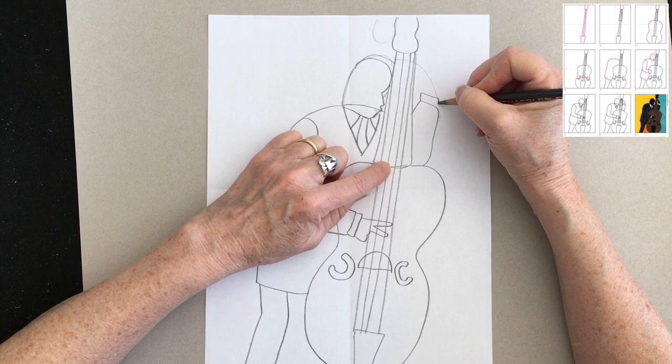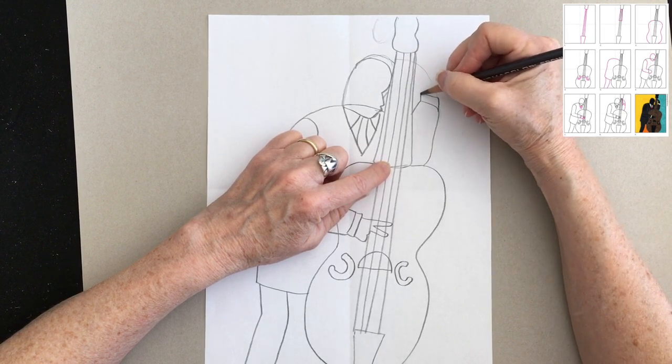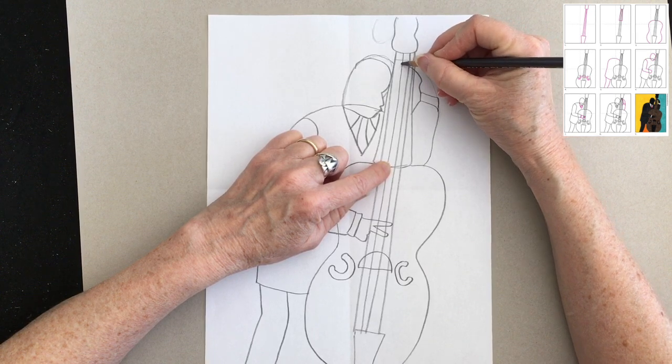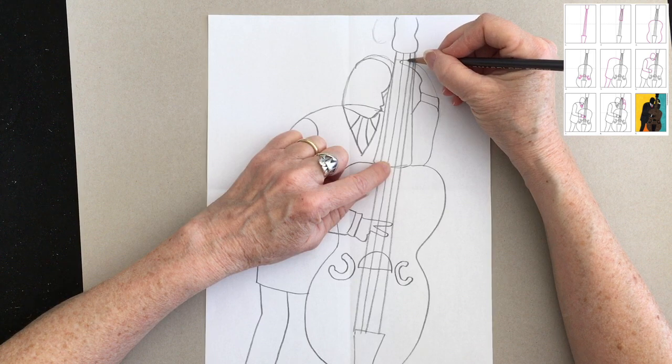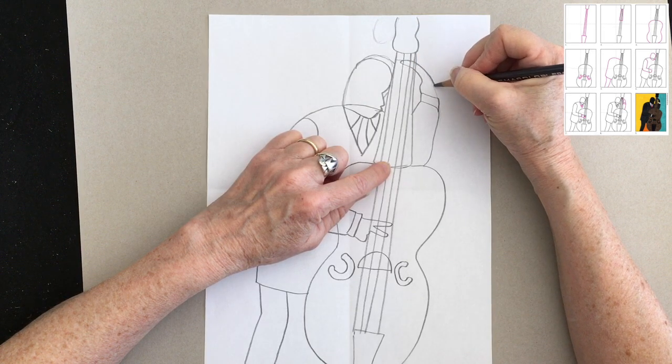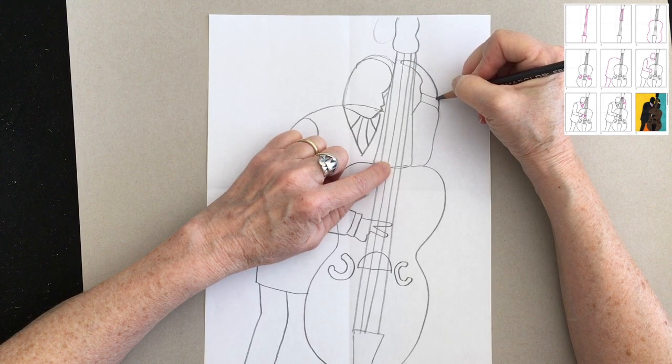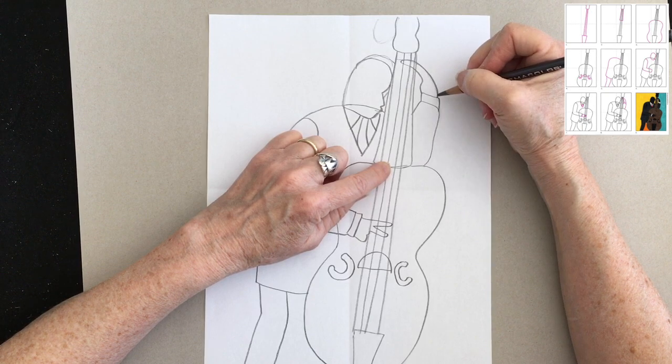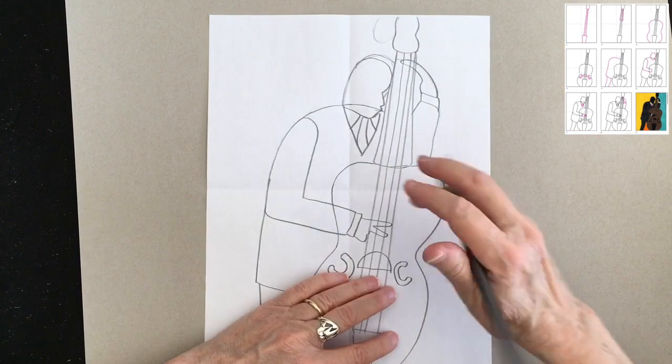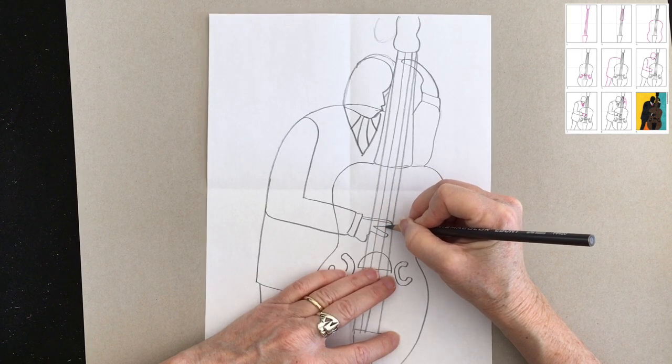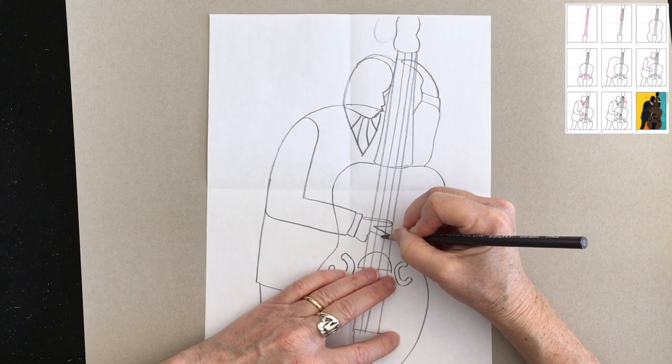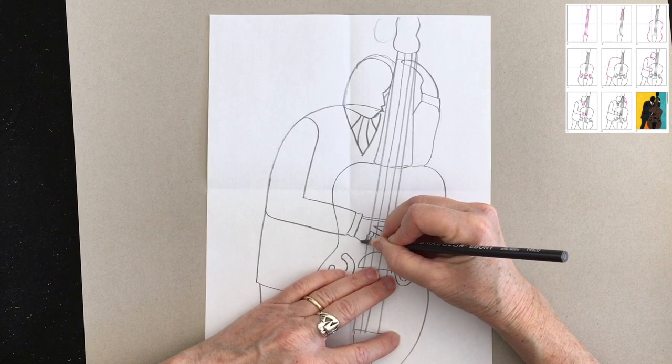There's that cuff again. And then this hand is shaped a lot differently because it's just pressing down on those strings, so it's more like a design of a hand than a real looking hand. I think this hand should be bigger, so because I'm still working in pencil, I can go back and make those changes.